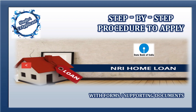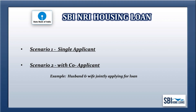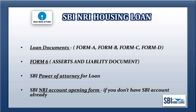Hello friends, welcome to our channel. In this video we are going to see the step-by-step procedure on how to apply for SBI NRI housing loan with forms and supporting documents. We have two scenarios: scenario one is a single applicant, scenario two is with a co-applicant, for example husband and wife. The loan documents include Form A, Form B, Form C, Form D, Form 6 asset and liability document, SBI power of attorney for loan, and the SBI NRI account opening form for persons who don't have an SBI account already.